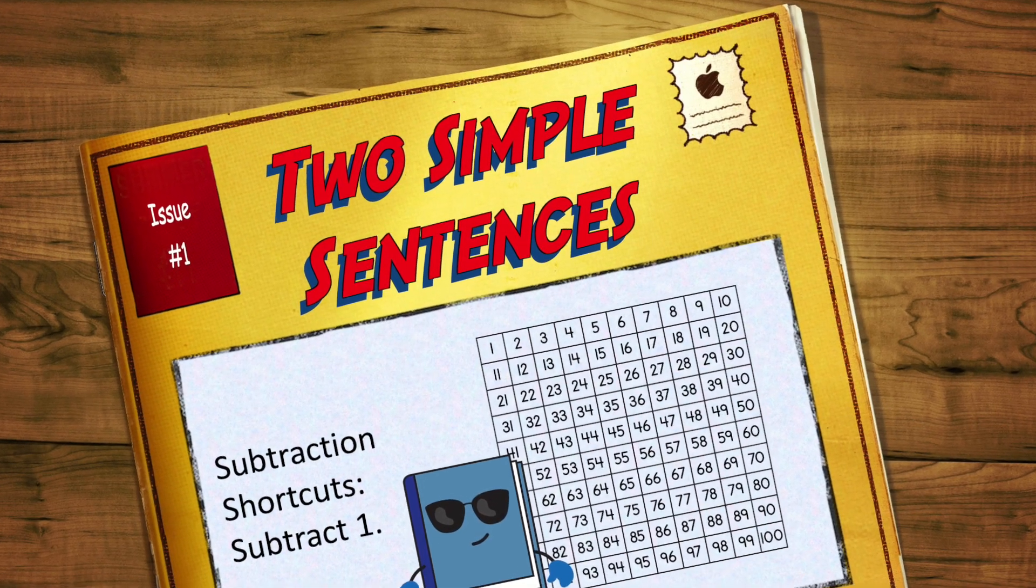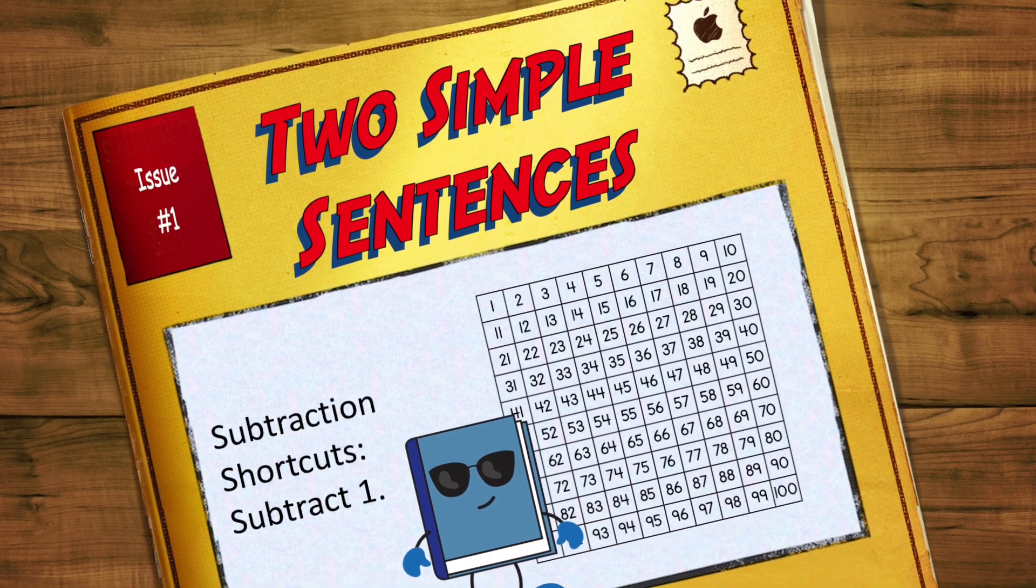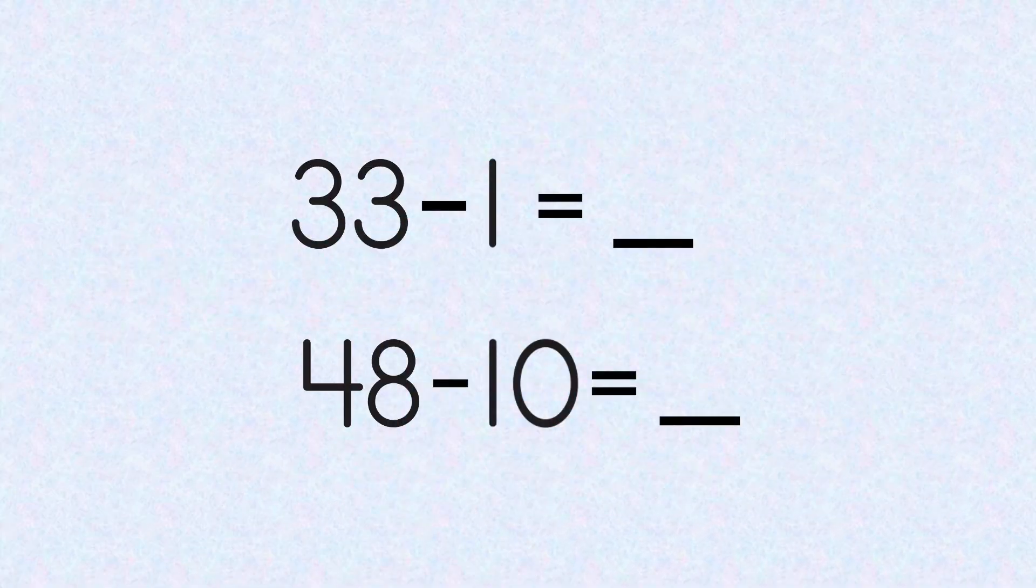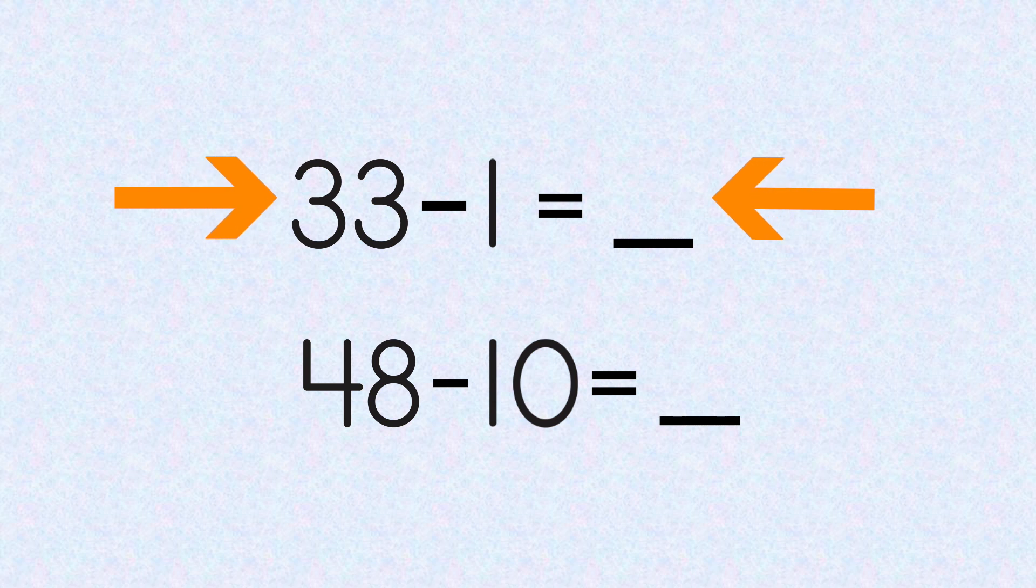Today we are going to take a look at two very simple number sentences. Our first number sentence: 33 minus 1 equals blank, and 48 minus 10 equals blank. Let's take a look and see how these shortcuts work.